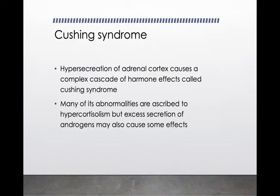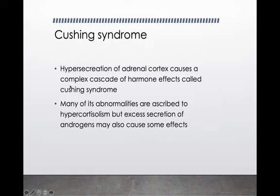The next disease is Cushing syndrome — the hypersecretion of the adrenal cortex causing a complex cascade of hormonal effects. Many of its abnormalities are ascribed to hypercortisolism, meaning more cortisol hormone, but excess secretion of androgens may also cause some effects.